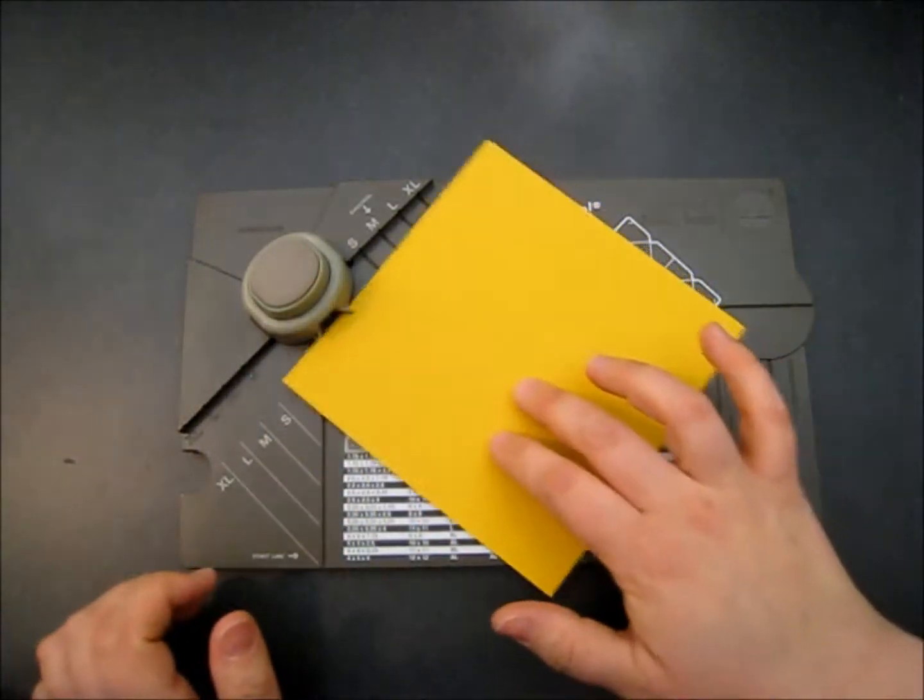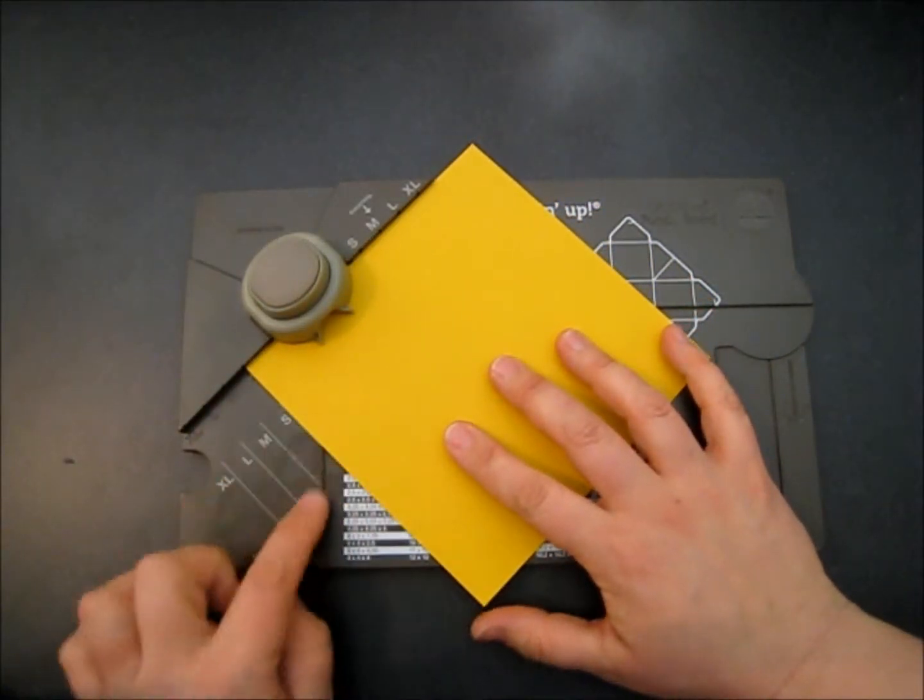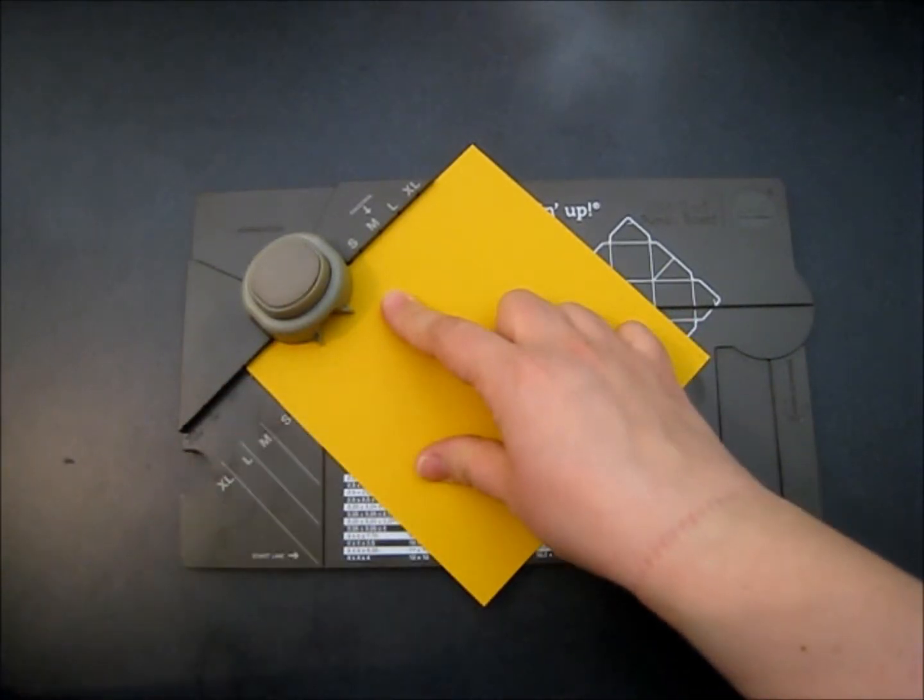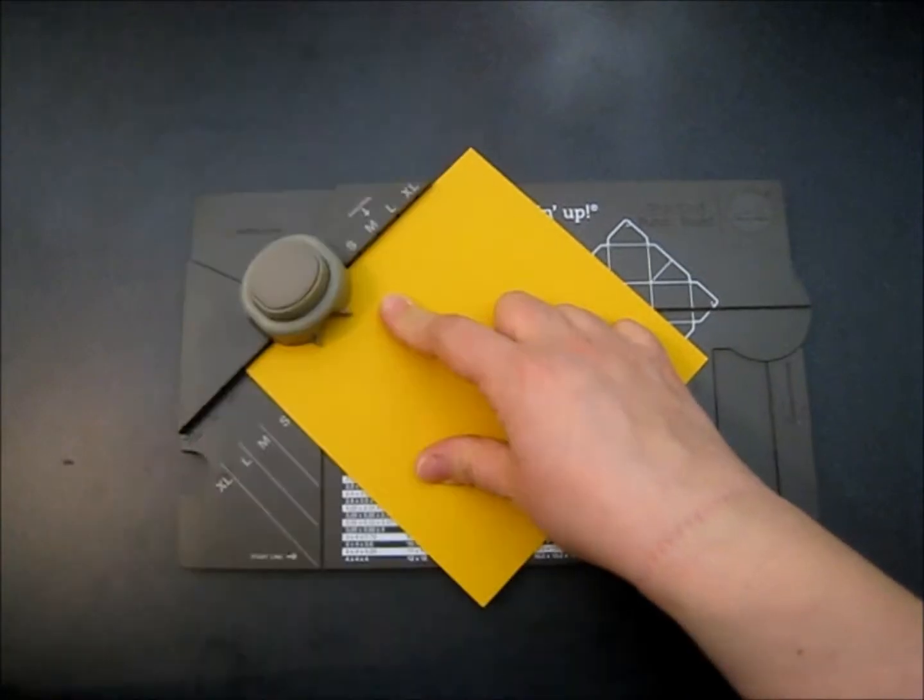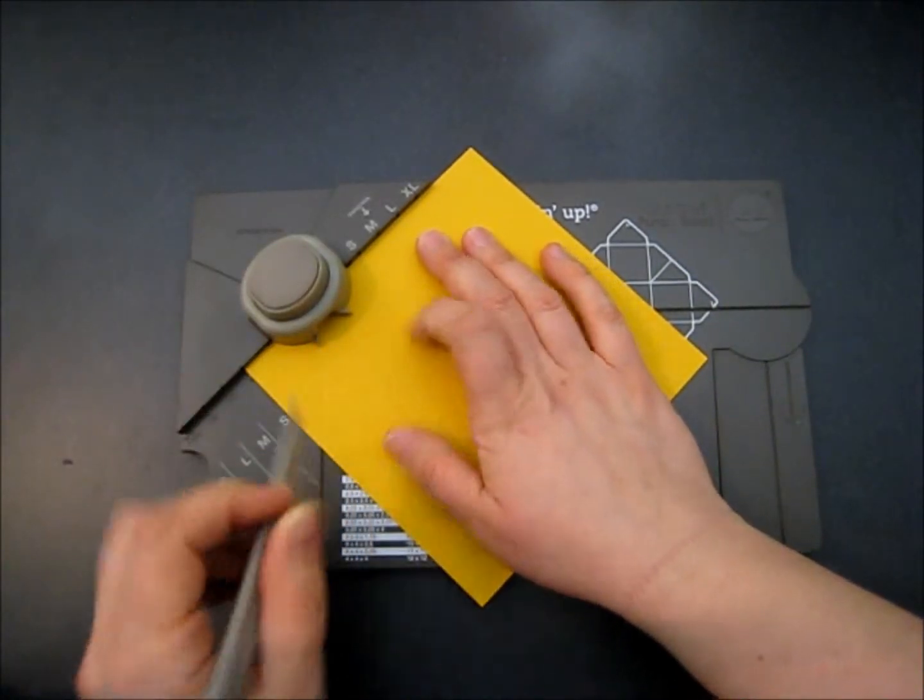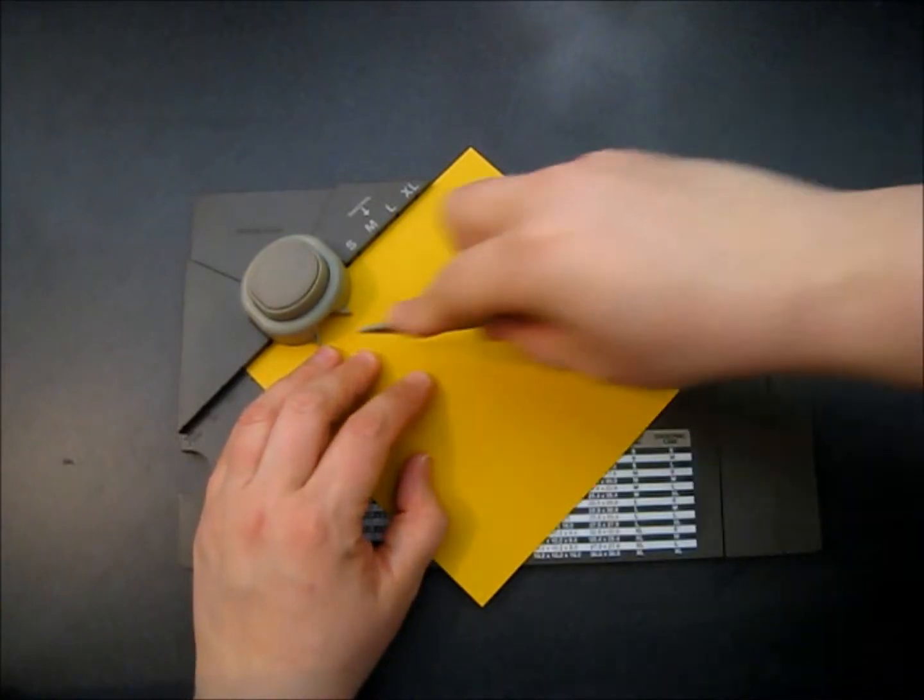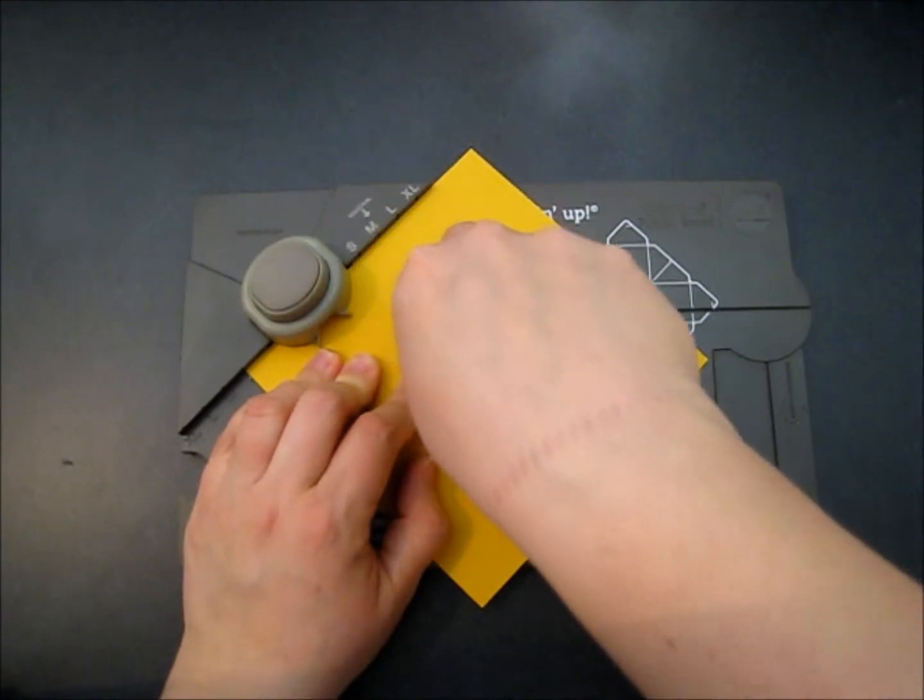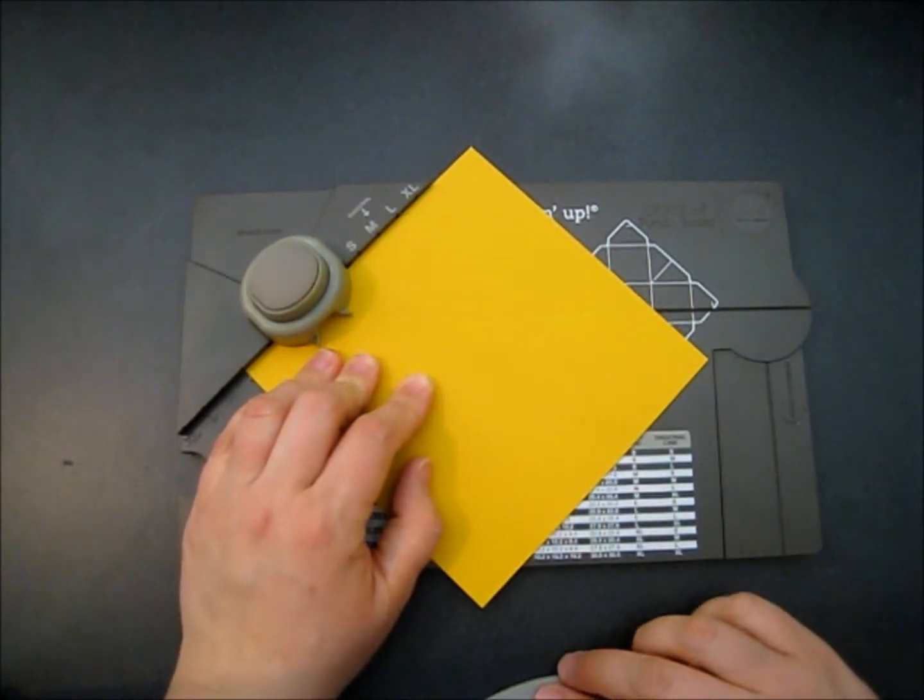So we're going to put our paper in. We're going to line it up with our start line, which is the S for small. And then we're going to punch. We're going to score down. We're going to score all the way across. And then that diagonal line was a small as well. So that's it for one side.